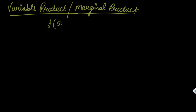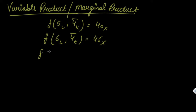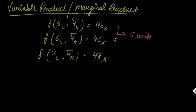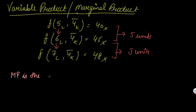Now let's look at marginal product. With five labors and four units of constant capital, you had 40 total product. With six labors you had 45 total product. Then increasing labor further, you get 48 total product. From 40 to 45 — by increasing one unit of variable factor — you increased total product by 5. Then increasing one additional unit, you get 3 additional units of product. This additional product from one additional unit of variable factor is your marginal product — it is the additional output.